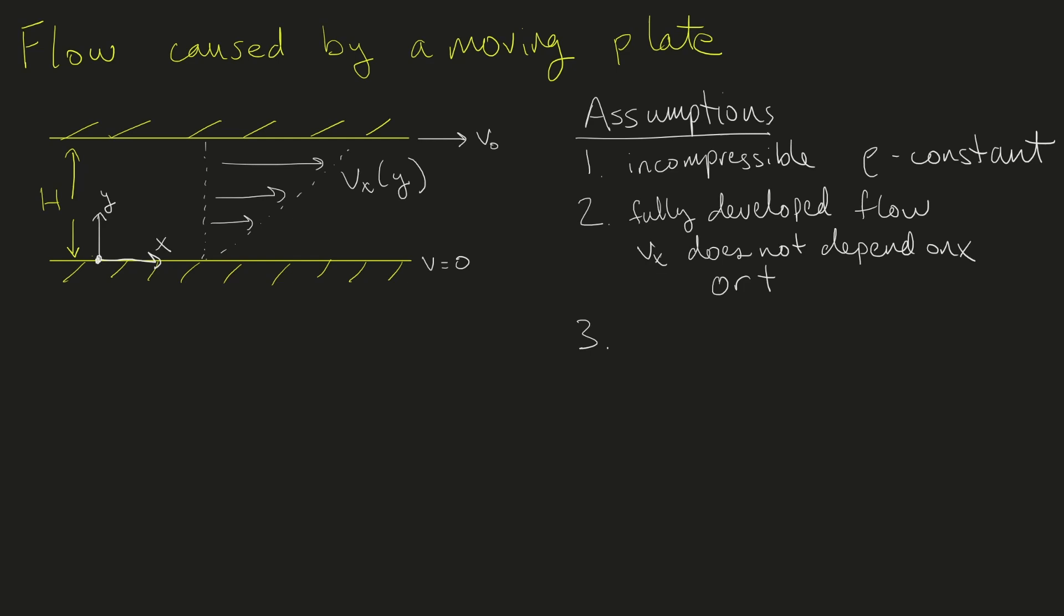Our third assumption is that these are large plates, so we can ignore the z direction. This means that vz equals zero and the dependence on z is zero. So the velocity in the x direction does not depend on the z direction.